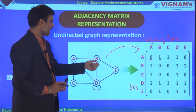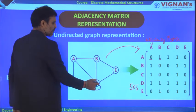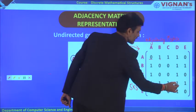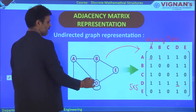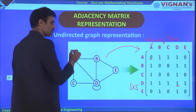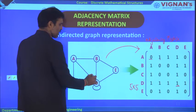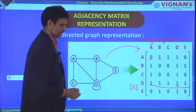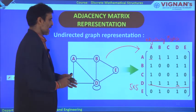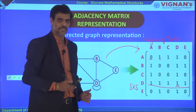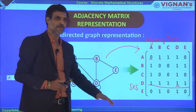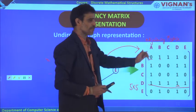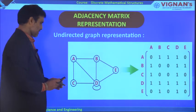For vertex D, because there is a self-loop at D, D to D equals 1. D to B, D to A, D to E, D to C — all have edges, so the entire row for D consists of ones. This is how we represent an undirected graph in matrix form. Since it is not possible to store a visual graph directly in computer memory, we convert it to matrix representation storable as an array.